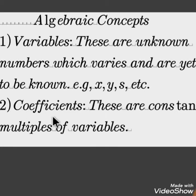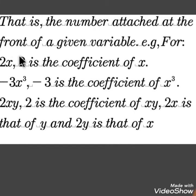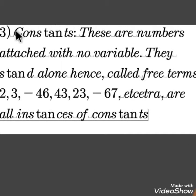Coefficient: These are constant multiples of variables, that is, the number attached at the front of a given variable. E.g., for 2x, 2 is the coefficient of x. For minus 3x cubed, minus 3 is the coefficient of x cubed. For 2xy, 2 is the coefficient of xy. Again, 2x is the coefficient of y, and 2y is the coefficient of x.